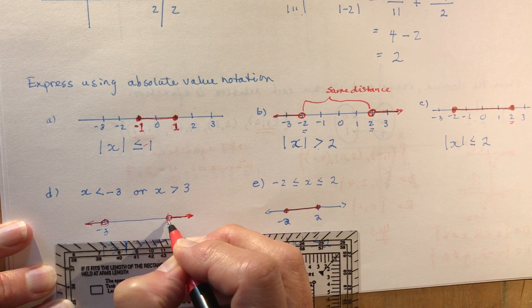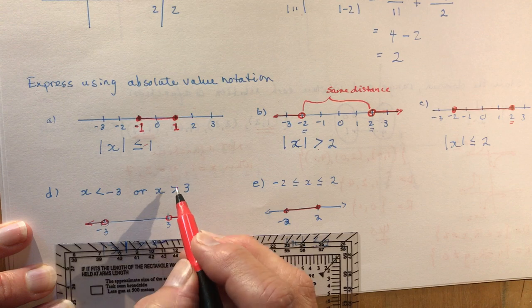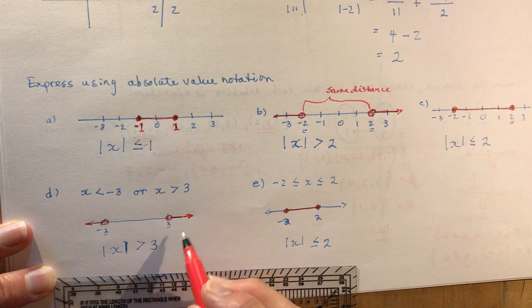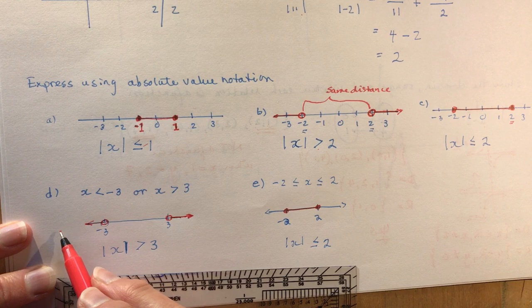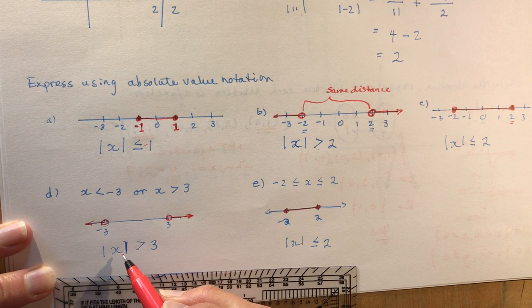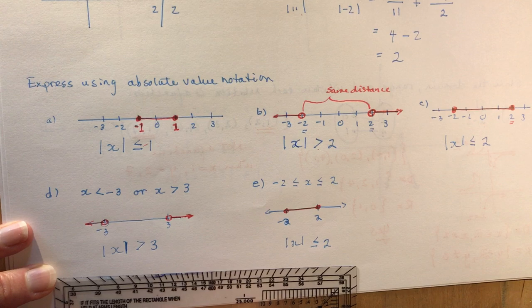I'm going greater than 3 but not equal to because it's an open circle, so the absolute value of x is greater than 3. If you put in negative 5 for instance, the absolute value of negative 5 would be positive 5 and that is greater than 3.